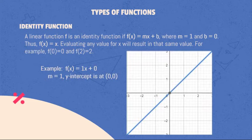Take this equation, f(x) = 1x + 0. From the equation, we can gather that m = 1, and y-intercept is at the point (0, 0). The image shows the graph of this equation.